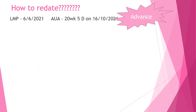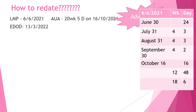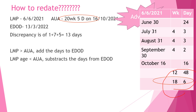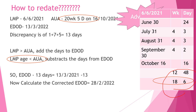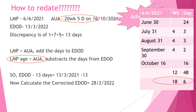Another example using the same LMP, but now the sonography on 16th October shows 20 weeks 5 days. The gestational age by LMP on 16th October is 18 weeks 6 days. Here the LMP age is less than the sonography age, so we subtract the days from the EDOD. EDOD minus 13 days gives 28th February 2022 as the corrected EDOD.